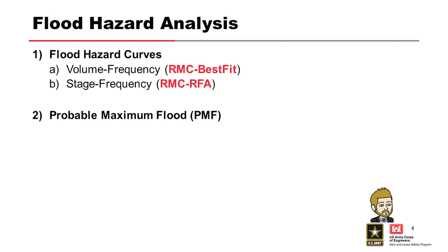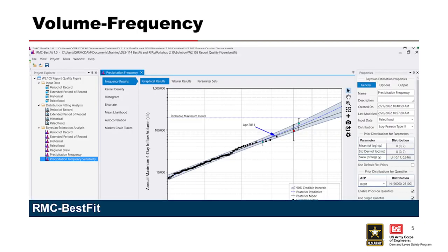The key components of flood hazard analysis include flood hazard curves and the probable maximum flood, or PMF. This training class focuses on the development of the flood hazard curves. There are two general types needed for risk assessment: the volume frequency curve and the stage frequency curve. RMC Best Fit is used to develop volume frequency curves, and RMC RFA is used to develop stage frequency curves. The agenda is broken into two sections in that order.